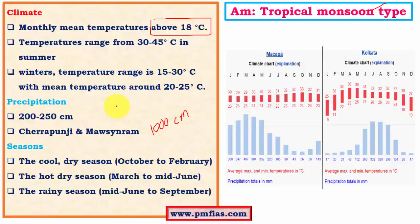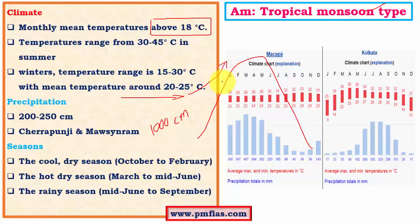Cherrapunji and Mawsynram are mainly affected by the orographic effect, where orographic rainfall occurs. When winds with high humidity strike a mountain, they undergo upliftment — this is called orographic uplift. The windward side receives intense rainfall. On the other side, the wind loses moisture and descends the slope as a katabatic wind, which is dry and warm and brings no rainfall. The leeward sides are totally dry, resembling semi-arid conditions, while windward sides receive good amounts of rainfall.